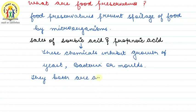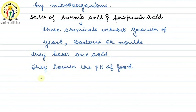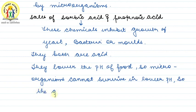Since they are acids, if you dissolve them in food, the pH of the food will decrease. They lower the pH of the food. And if the food's pH becomes lower, microorganisms cannot survive in lower pH. So the growth is inhibited or stopped.